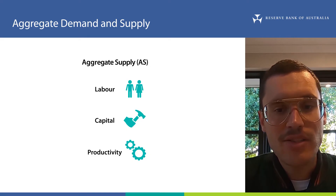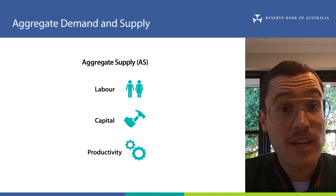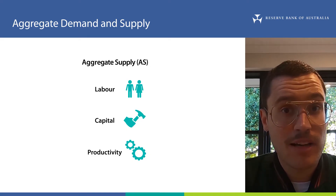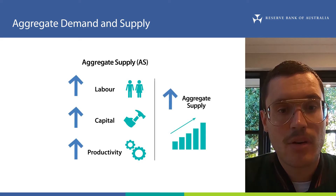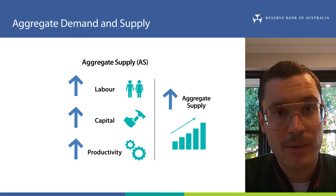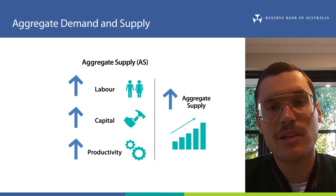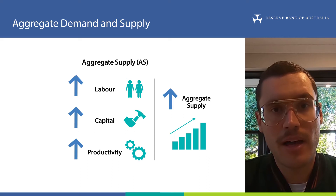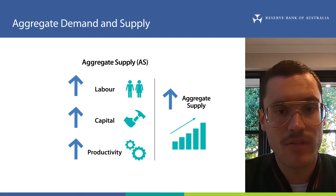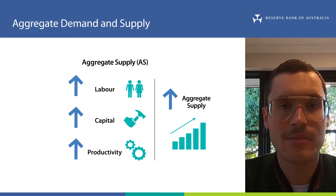Changes to labour, capital and productivity will change aggregate supply. All else equal, more labour and capital inputs and higher productivity will mean more output of goods and services and therefore higher aggregate supply.